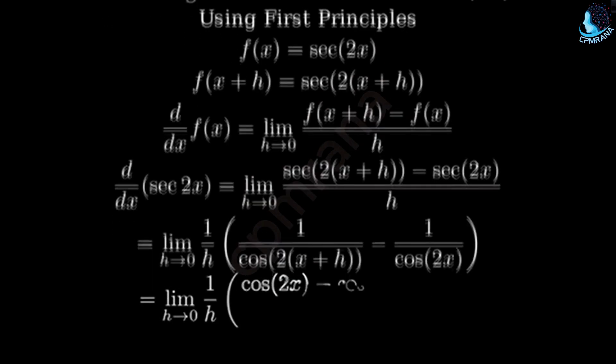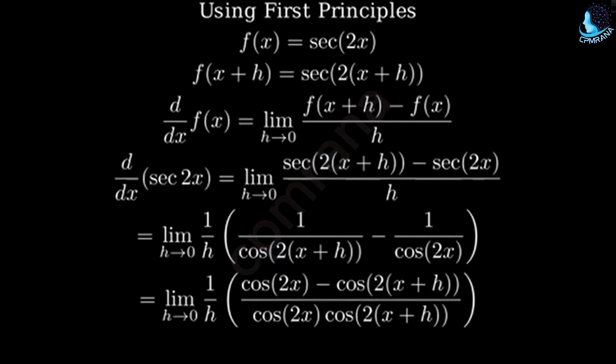To subtract these fractions, we need a common denominator. Multiplying both terms by their respective denominators gives us cosine of 2x minus cosine of 2x plus h over the product of the cosines.